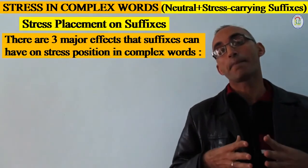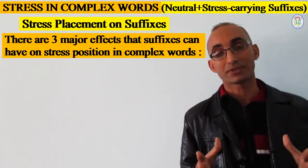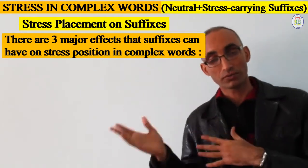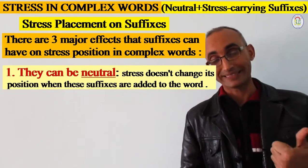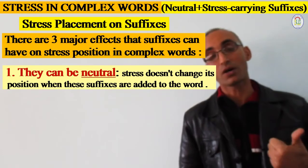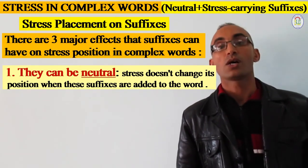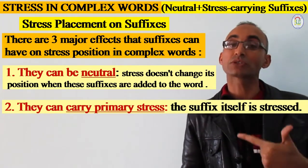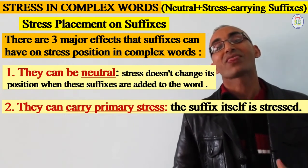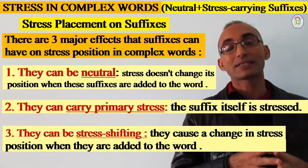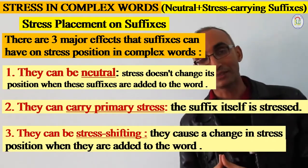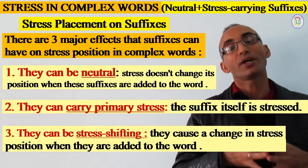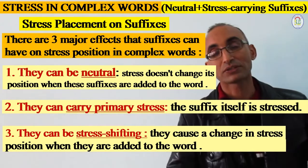We have three major effects that suffixes can exert at the level of the English complex word. Unlike the prefix, which is neutral, suffixes can be neutral — meaning there are some suffixes which also have no effect on stress placement. They can also receive primary stress. And third, suffixes can be stress-shifting, meaning when added to a word they can cause a change of stress position from one syllable to another on the stem.